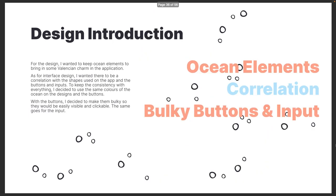Moving on to the design — I wanted to keep it very ocean-themed because I wanted to add some of the Valencian charm into the application. As you know, Valencia is known for the ocean. I also wanted to keep correlation with shapes, buttons, and inputs, so I chose to use the same colors of the ocean in the design and on the buttons. I also wanted to make the buttons and inputs bulky so that they're easily seen and clickable.